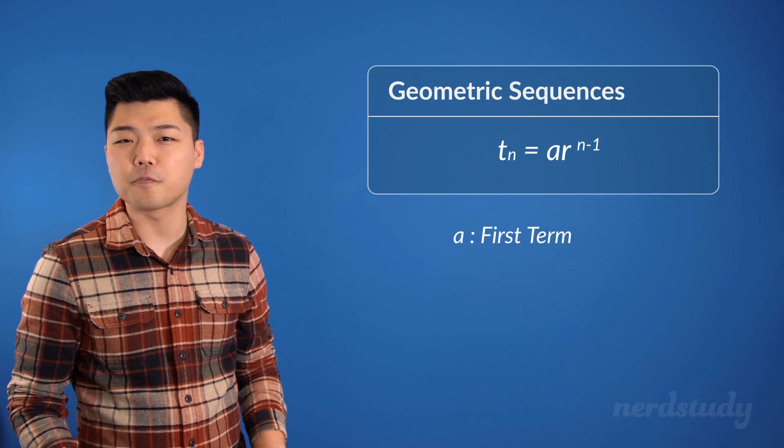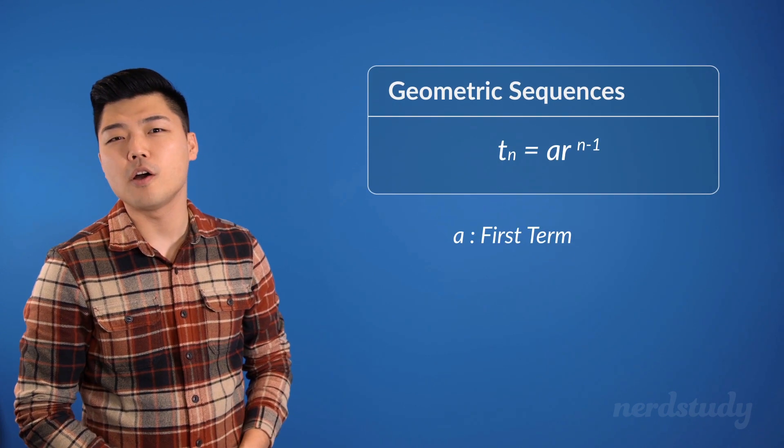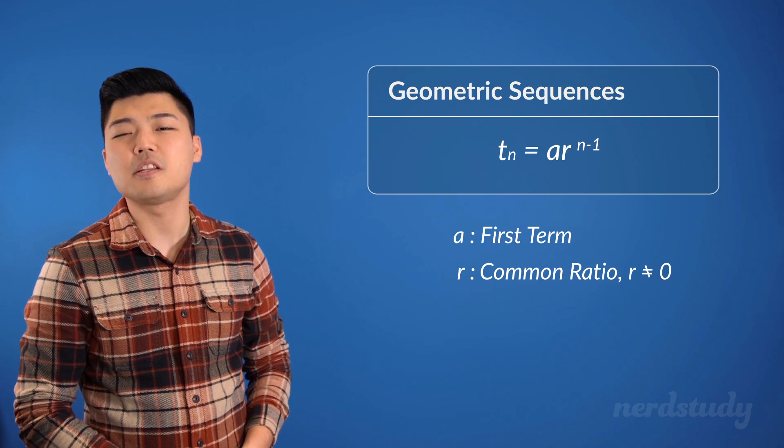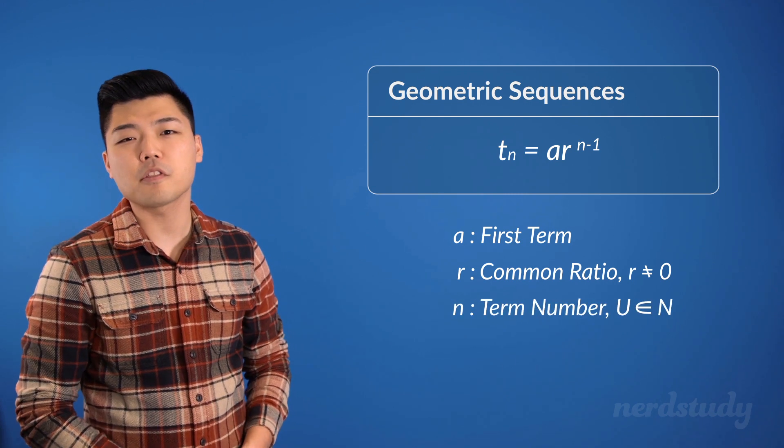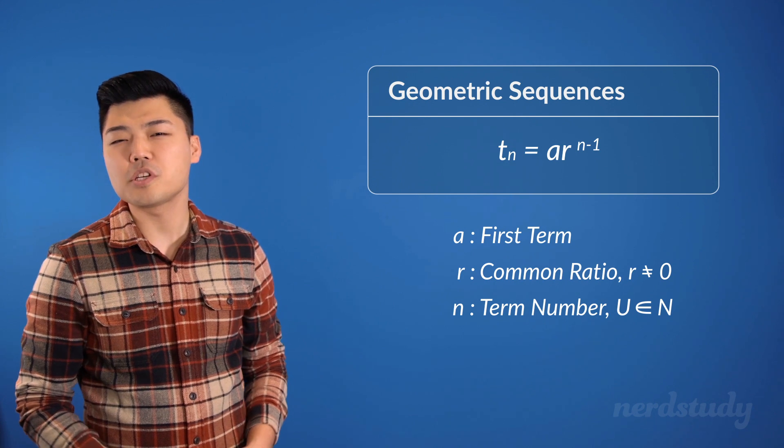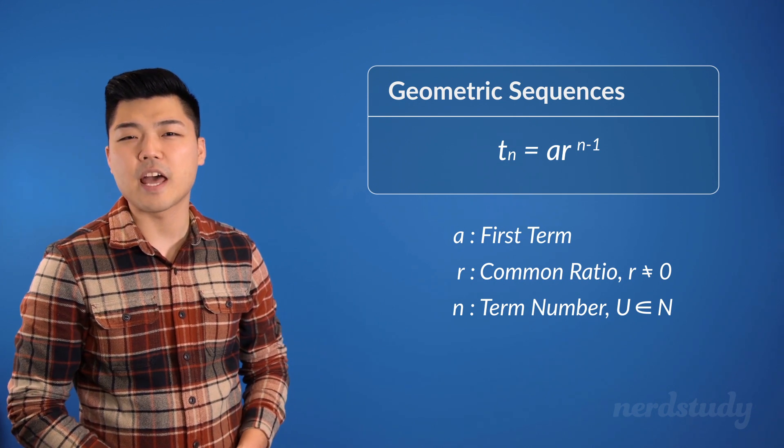where a is the first term of the sequence, r is the common ratio that does not equal zero, and n is the number of the term we're looking for, which is in the set of natural numbers.